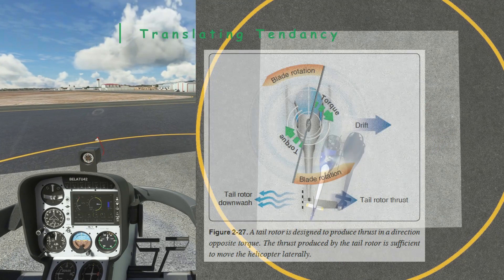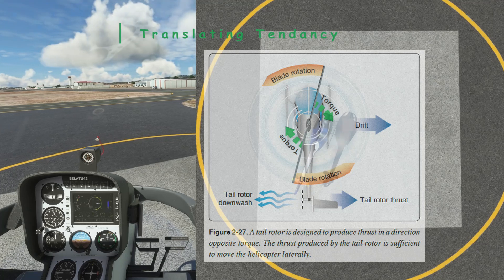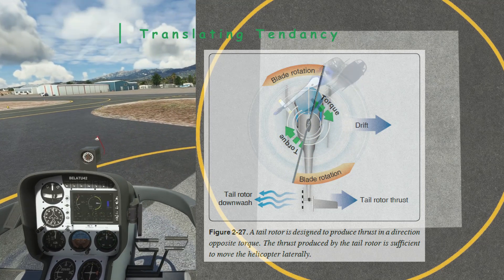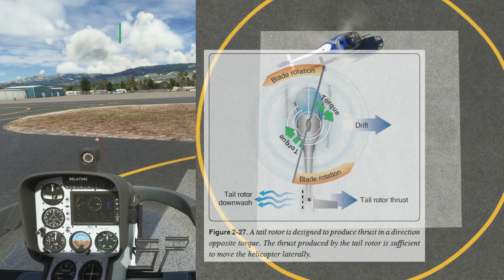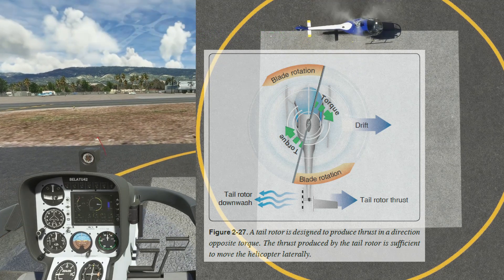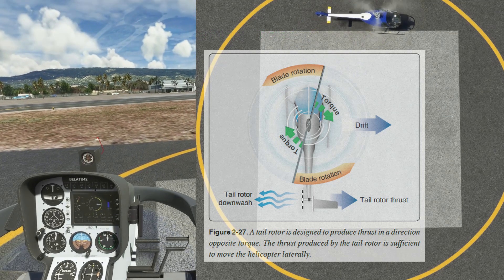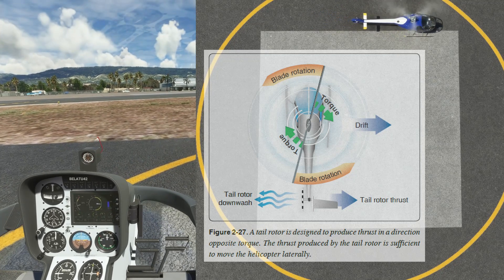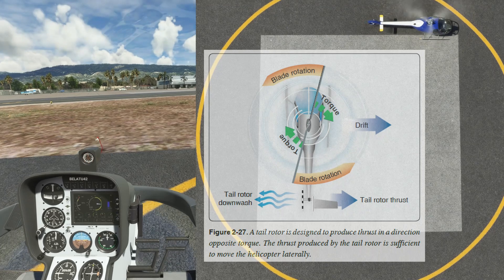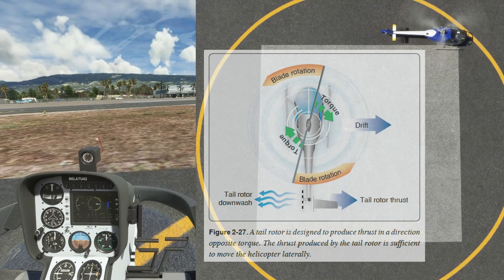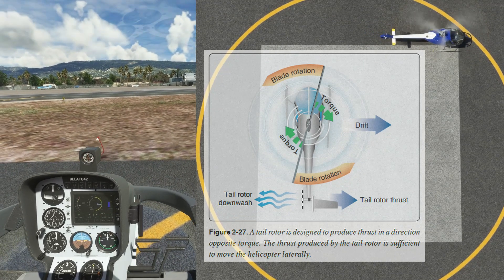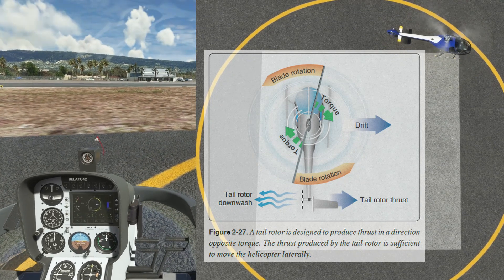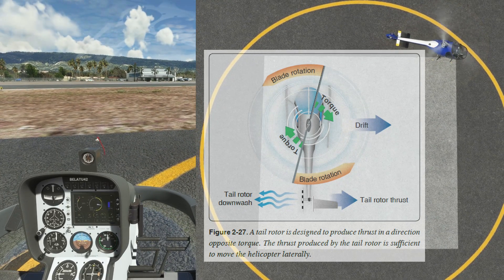Another really important effect to understand in the hover is the translating tendency. Translating tendency is due to the tail rotor thrust from counteracting the torque of the main rotor. In a single rotor helicopter, you have to counteract the main rotor thrust. Once you have departed the friction of the ground contact of the skids, you counteract that with the tail rotor thrust. And the tail rotor thrust actually pushes you sideways, and you have to counteract that drift.